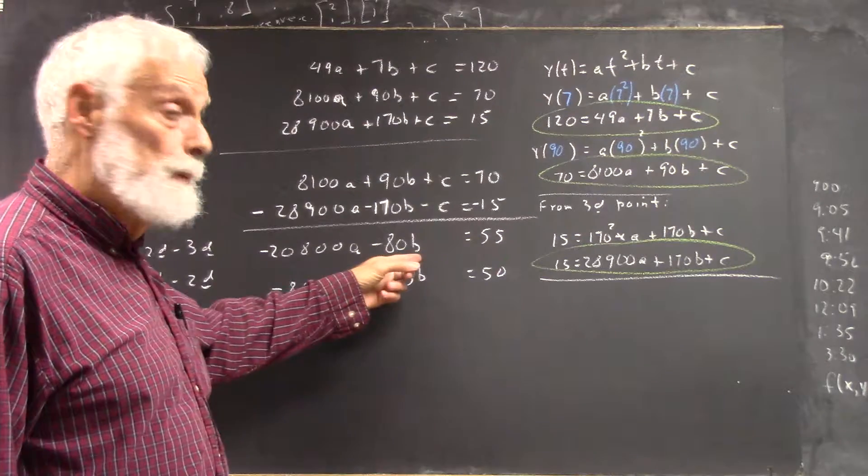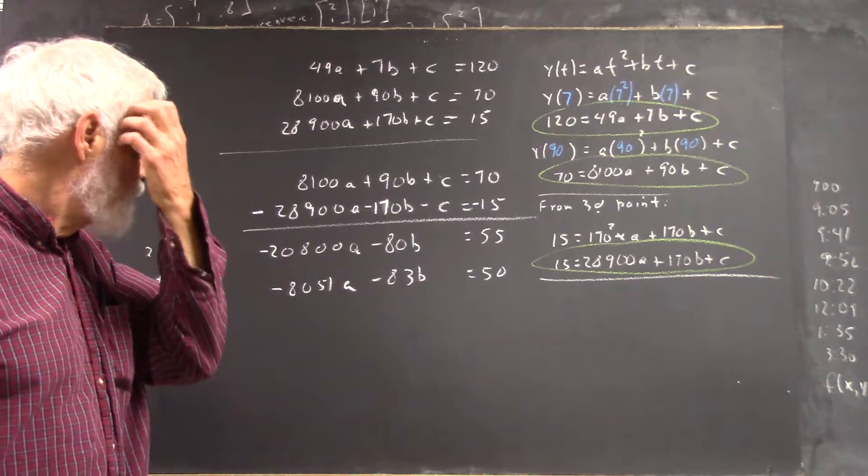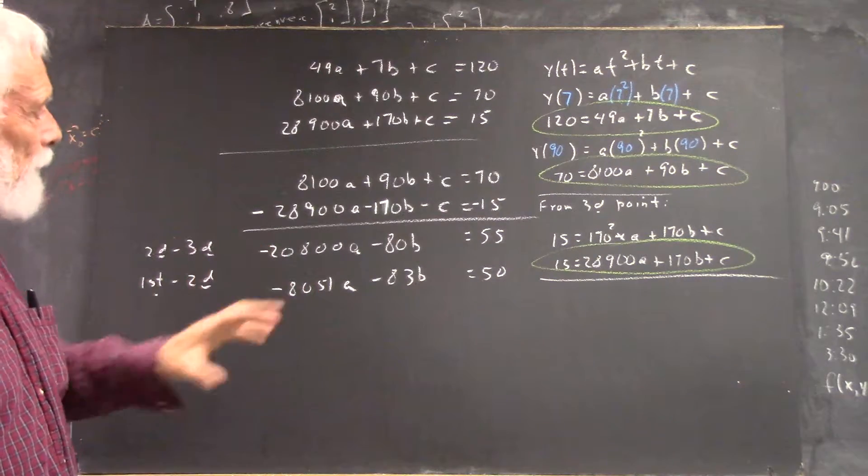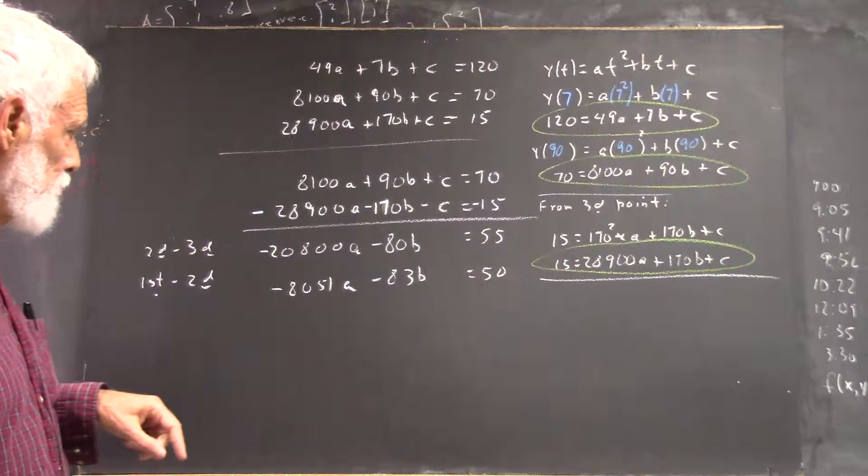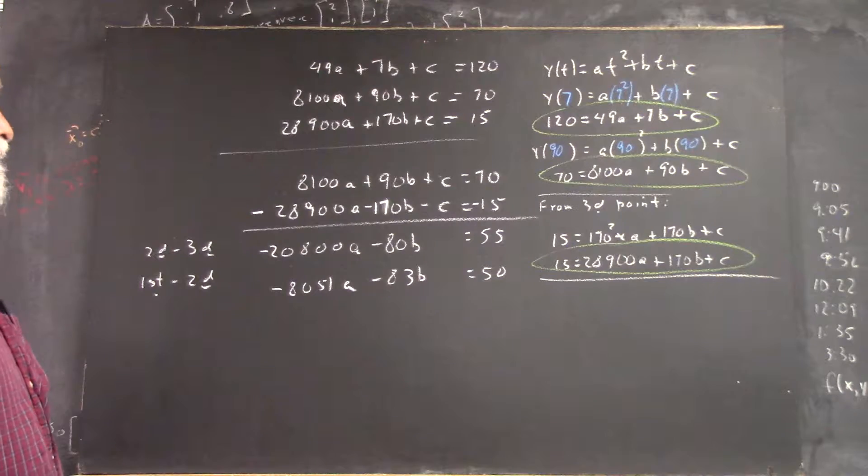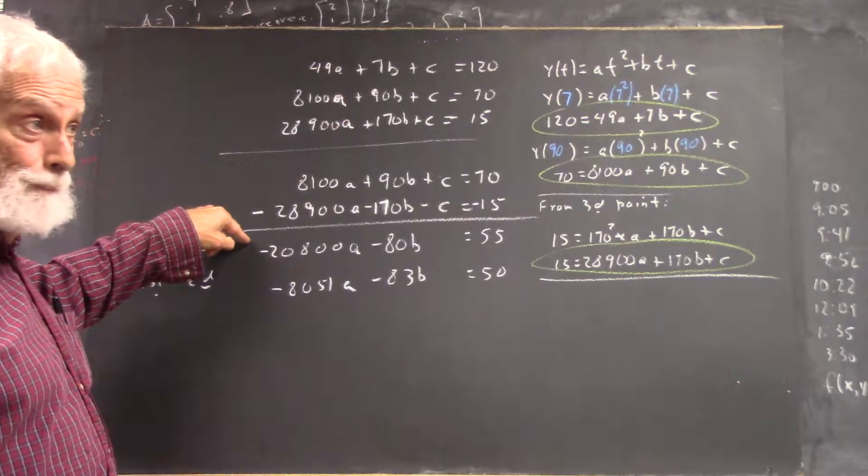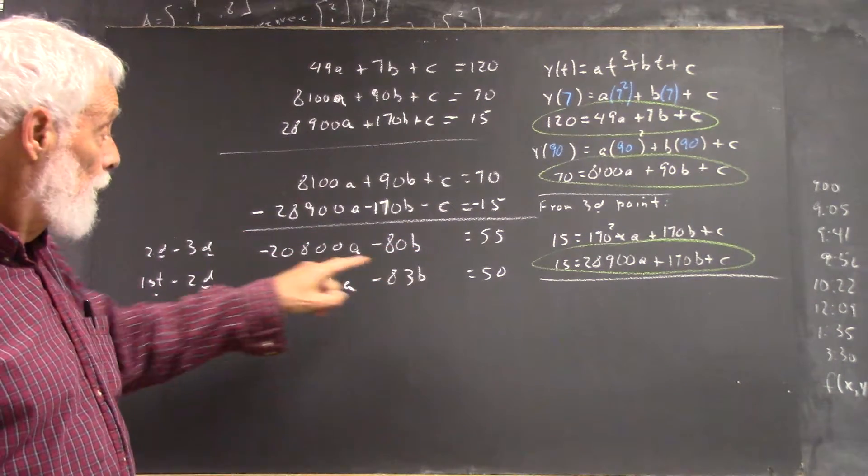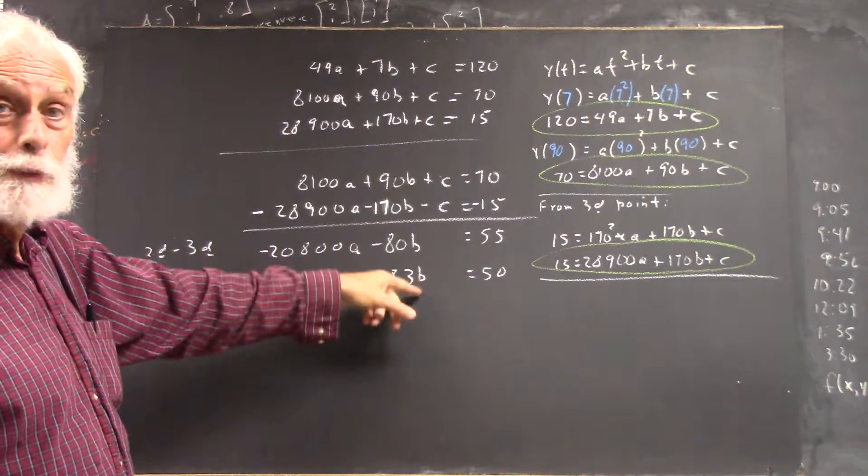Now I want to find a solution for A and B. Well, what I do at this stage gets a little tricky in the arithmetic. So I'm not actually, I'm going to let you do something that makes the arithmetic a little simpler for your exercise. And you'll see in the assignment. If I was to multiply this equation by negative 83, then I'd have 83 times 80B. And if I multiply this equation by 80, I'd have negative 80 times 83. And my B's would go away, wouldn't they?